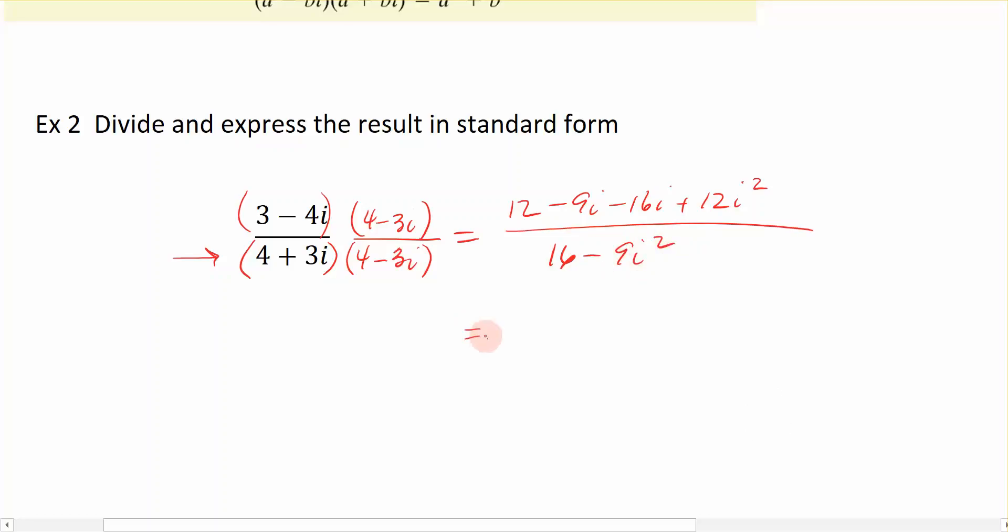So, from here, we're going to simplify further. And I'm going to go ahead and get rid of my i squareds so I can kind of clean this up. Remember, i squared is a negative 1. And negative 1 times 12 is negative 12. And we're going to do the same thing down here on the denominator. i squared is a negative 1. And a negative 1 times negative 9 is a positive 9.